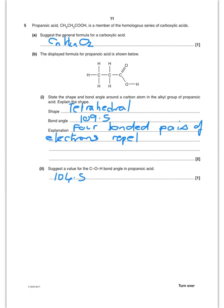So question five. Propanoic acid. General formula for carboxylic acid. Well you have double the number of hydrogens for each carbon. And always two oxygens. So I put that there.